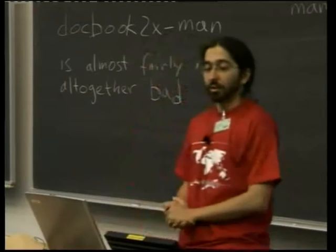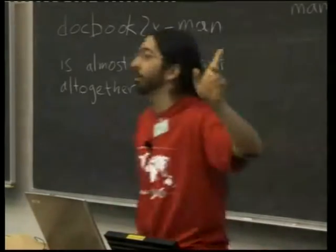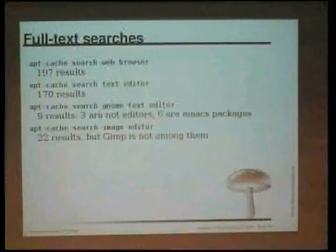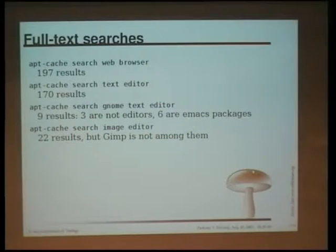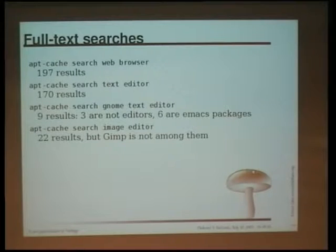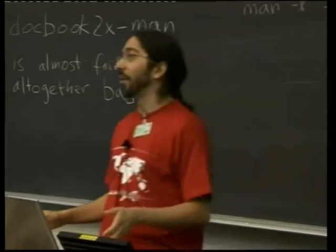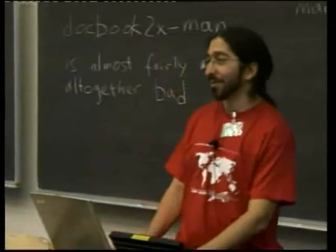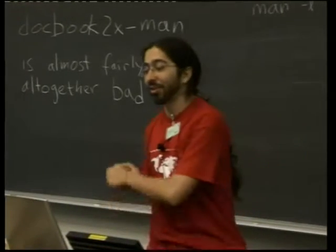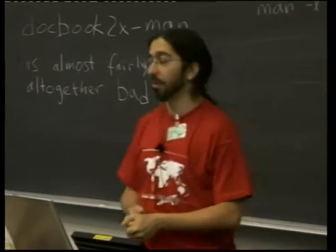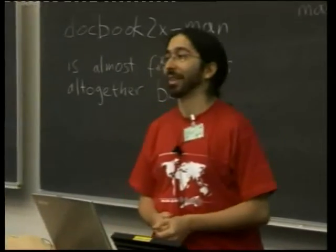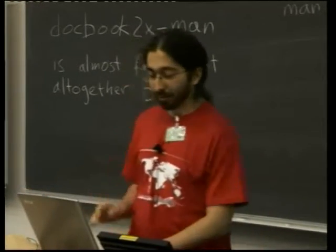Or we can do full-text searches. If I look for a web browser, I get 197 results — more than seven plus-or-minus two. Text editor gives 170. If I look for a GNOME text editor, I get nine results, three of them are not editors, and six of them are Emacs. And if I do apt-cache search for 'Emacs editor', I get 22 things, but not Vim. So they kind of work, but could be improved.